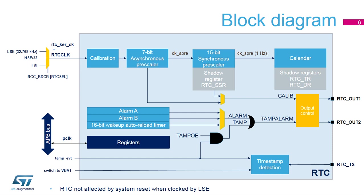To be functional in stop or standby mode, the RTC clock must use the LSE or LSI. To be functional in shutdown or VBAT mode, the RTC clock must use the LSE. The RTC clock is first divided by a 7-bit programmable asynchronous pre-scaler, which provides the CKA pre-clock. Most of the RTC is clocked at the CKA pre-frequency, so to reduce power consumption it's recommended to set a high asynchronous division value. The default value is 128.